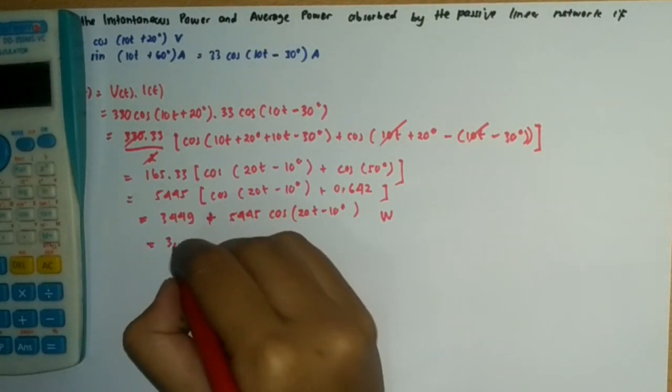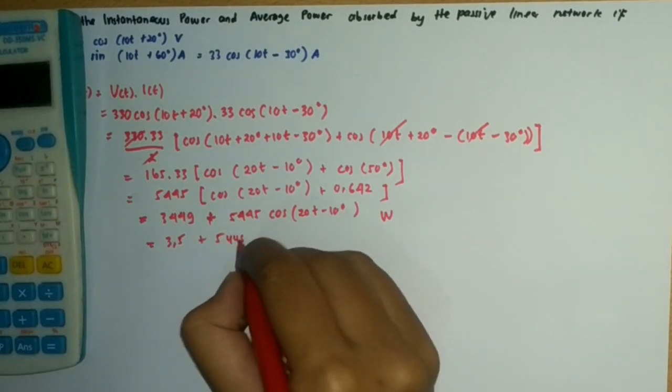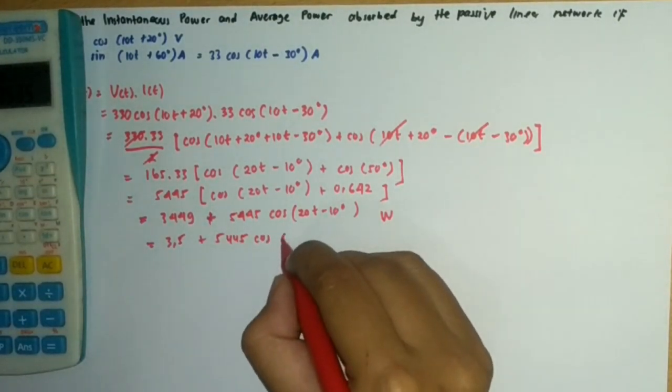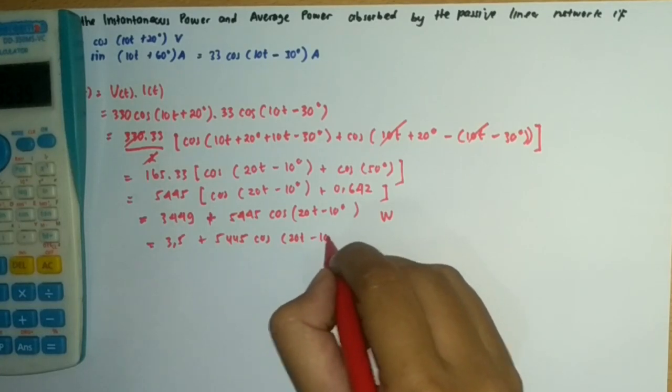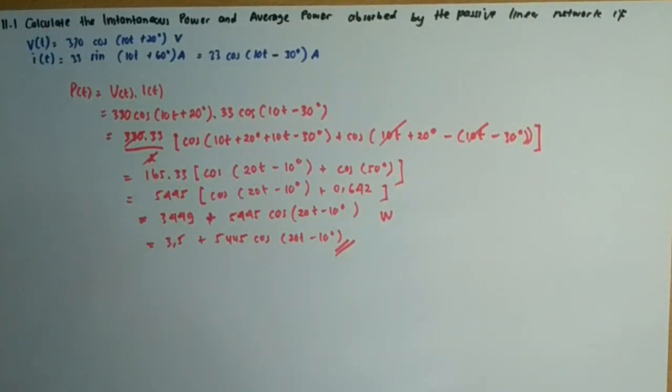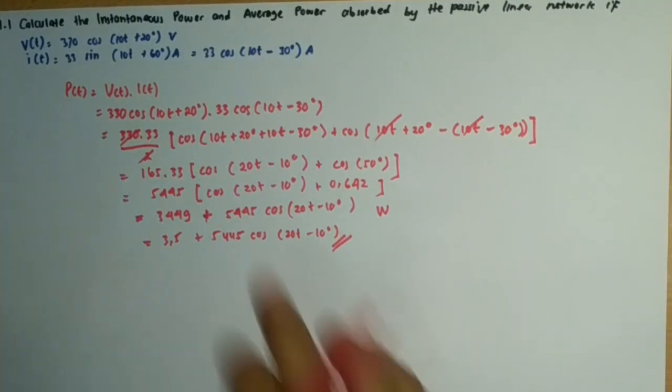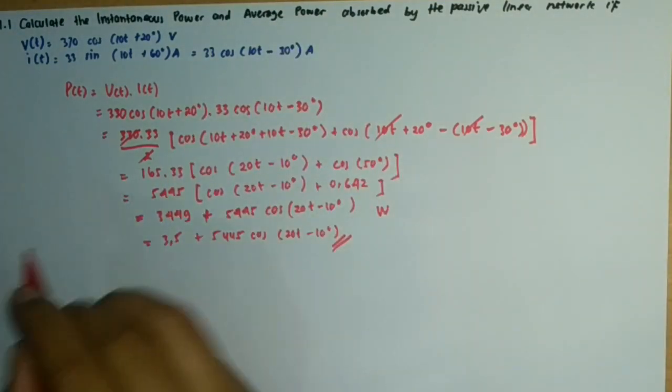Converting to kilowatts, this is the final result of the instantaneous power: P(t) = 3.5 + 3.5 cos(20t - 10°) kW.